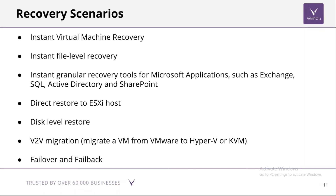The Universal Explorer provides granular mail-level restore for Exchange and SQL database-level restore for SQL — all instantly, without manual restore or spending additional time. There is also direct restore to the ESXi host to rebuild a crashed VM, disk-level restore for bare-metal recovery, and an option to perform V2V migration between different VM environments such as VMware to Hyper-V or KVM and vice versa. Immediate failback and failover are also available when VM replication is configured.